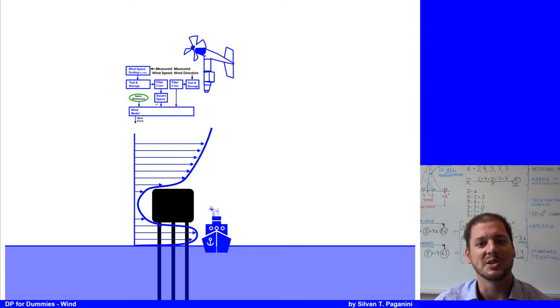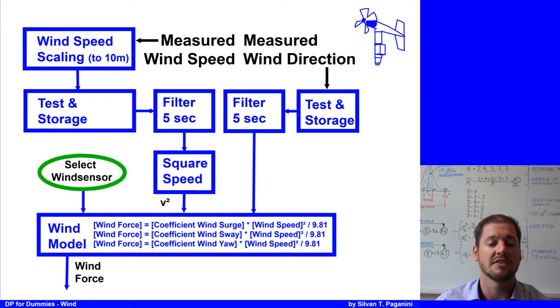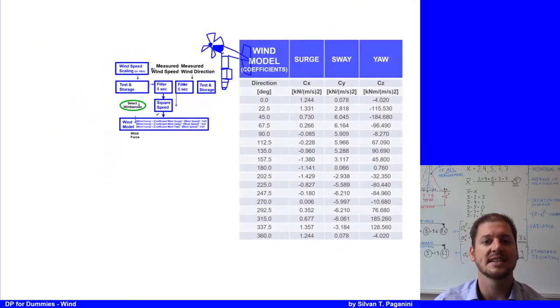Back to the wind model, which consists of three tables of coefficients: one for surge, one for sway, and one for yaw direction, covering 360 degrees of the vessel.